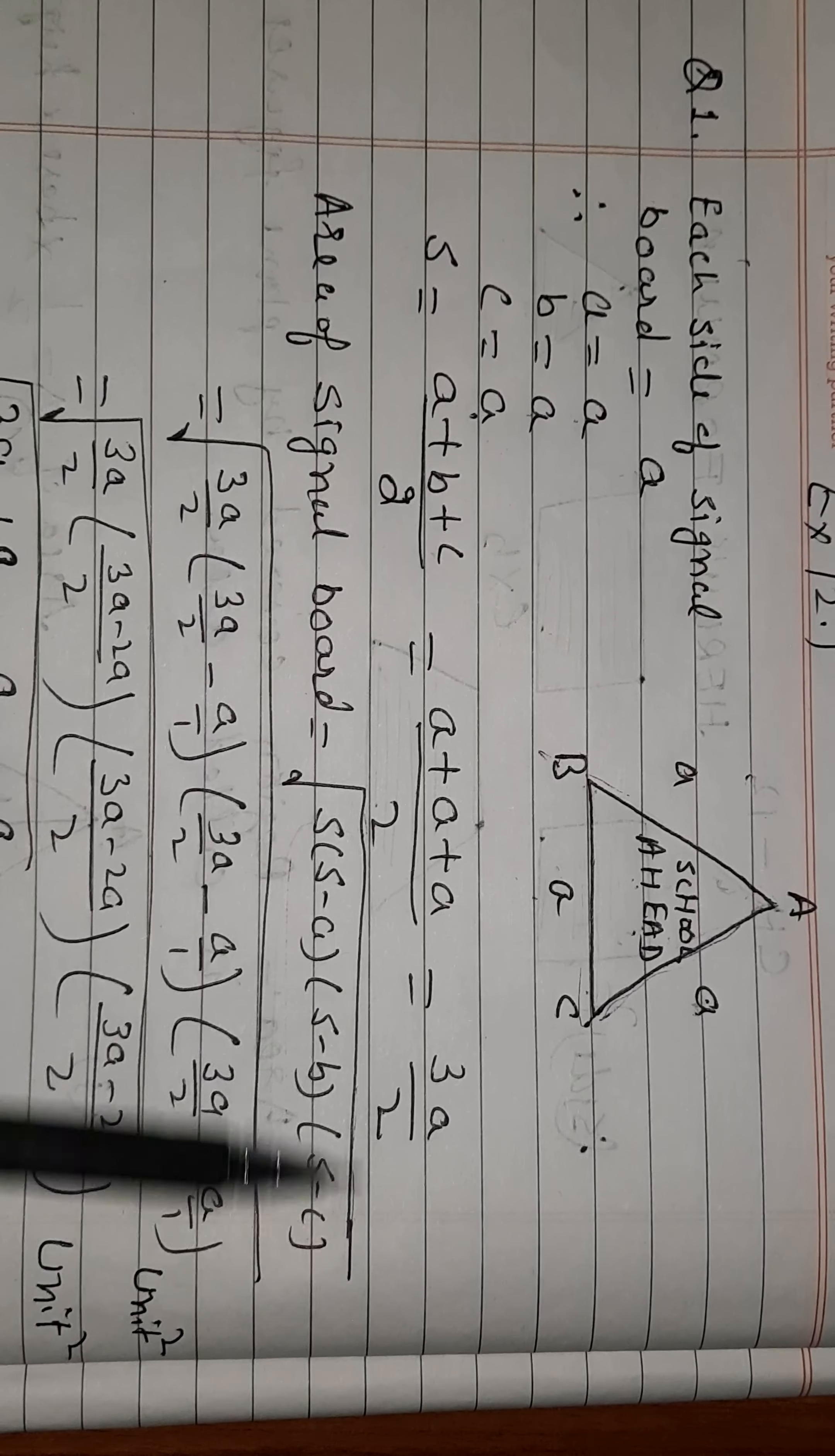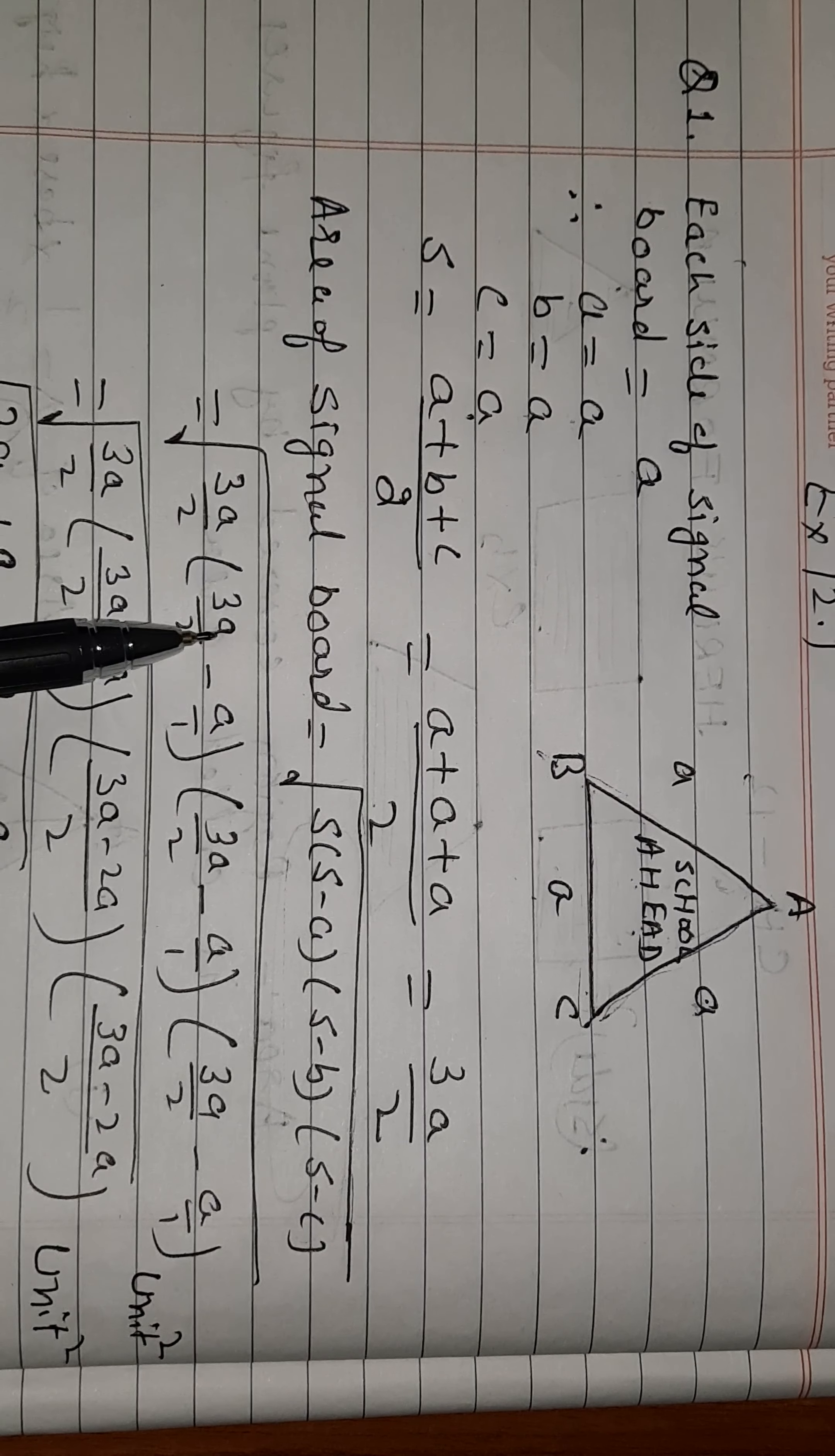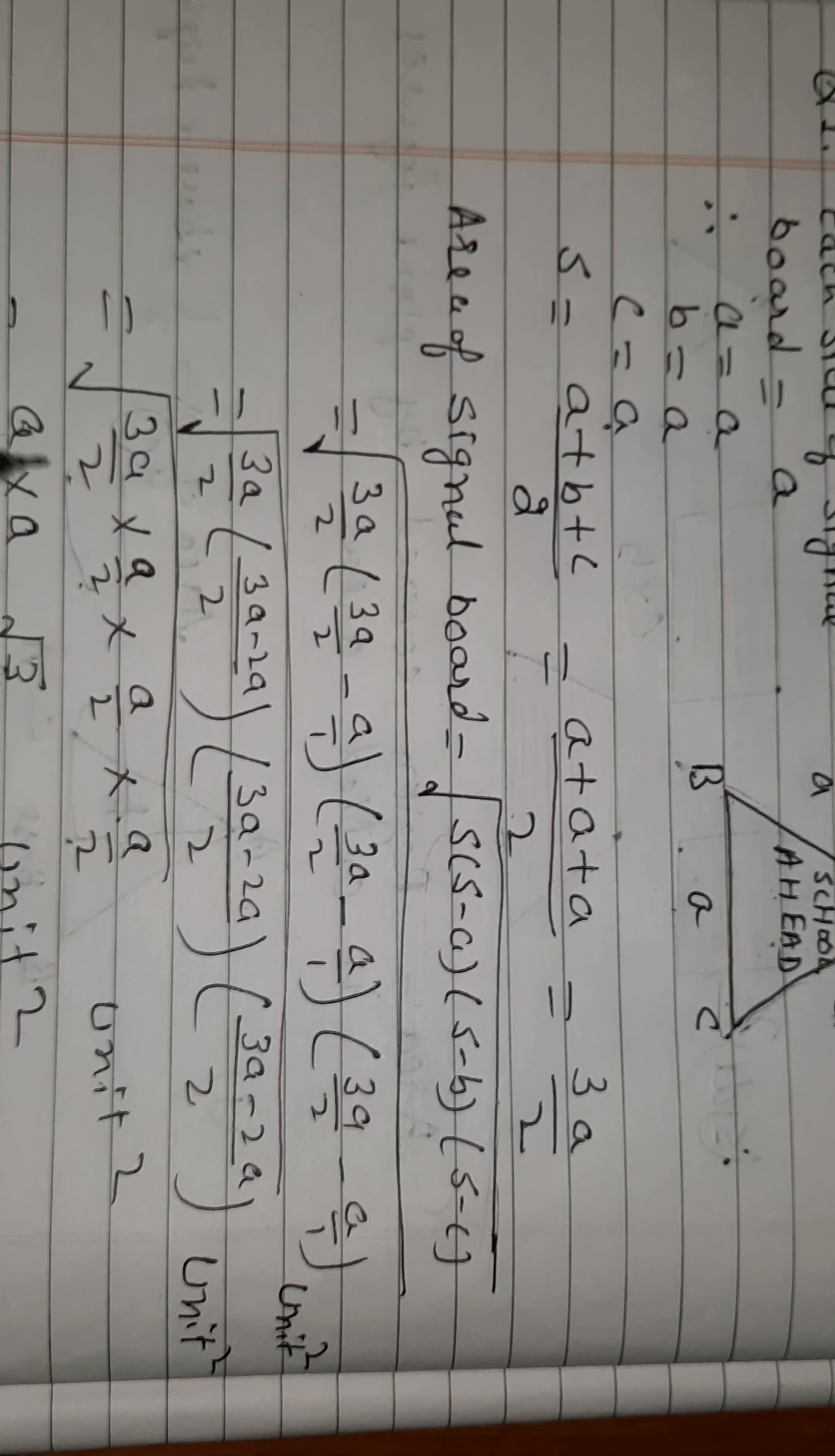Now area of signal board. This is Heron's formula: √[s(s-a)(s-b)(s-c)]. As we have calculated, s = 3a/2. So area = √[(3a/2)(3a/2 - a)(3a/2 - a)(3a/2 - a)]. Taking LCM, 3a/2 - a = (3a - 2a)/2 = a/2.